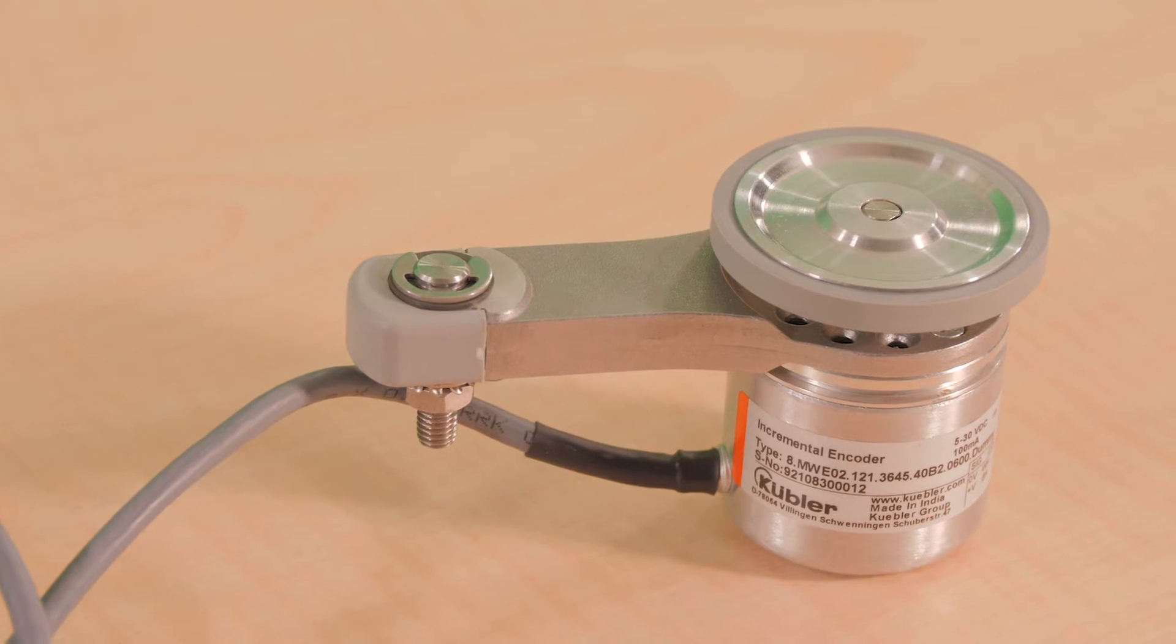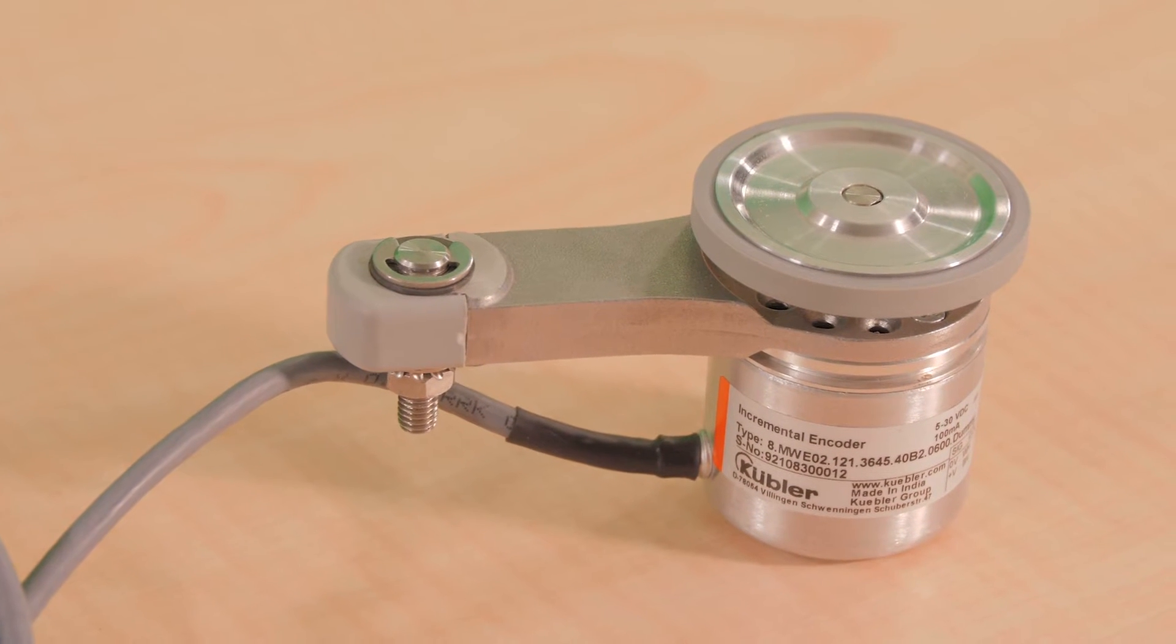When looking for speed, position, and distance measurement in applications with linear movements, a measuring wheel system like the MWE-02 from Kubler can be a good option.